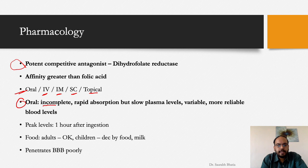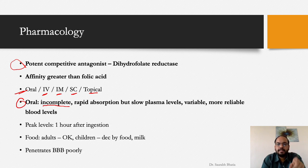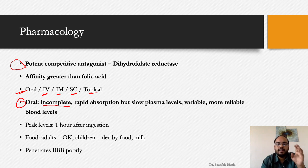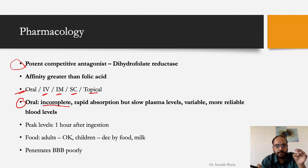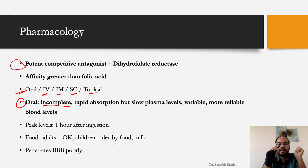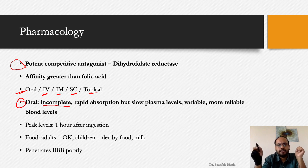Oral methotrexate has incomplete absorption. There is rapid absorption, but the plasma level rise is slow and variable. Because the rise is slow, the plasma level of methotrexate remains within a range for a longer time, making blood levels more reliable.